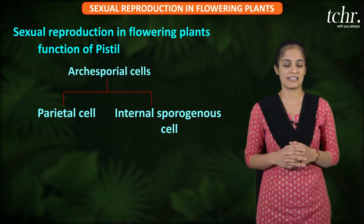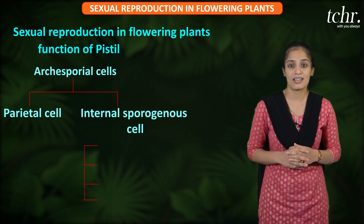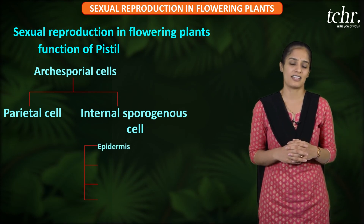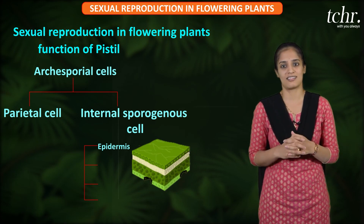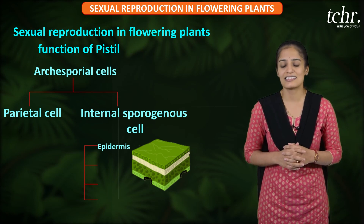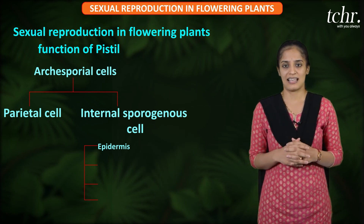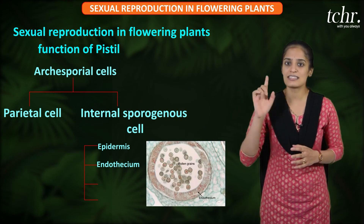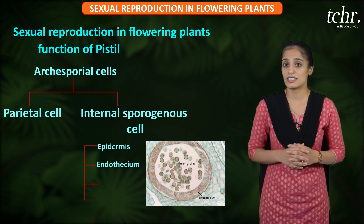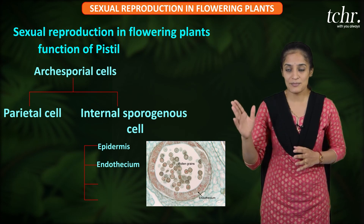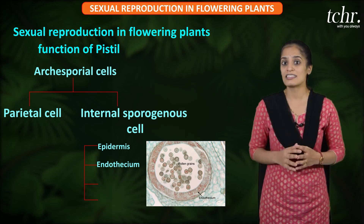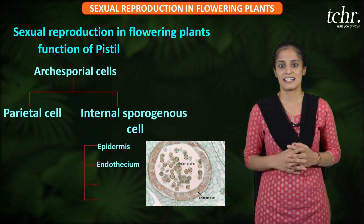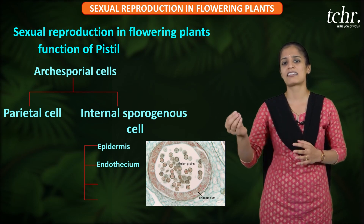The anther wall has four major layers. The outermost layer is the epidermis, which is a single layer and functions to protect the entire structure. The next layer is the endothecium, also a single layer. The endothecium contains cellulose, some pectin and lignin, and helps in dehiscence — that is, the rupture of the anther to release pollen grains.